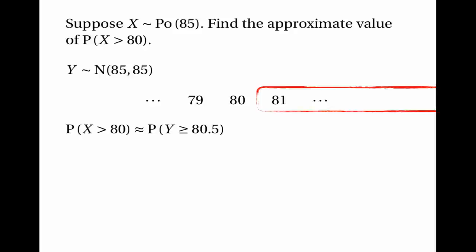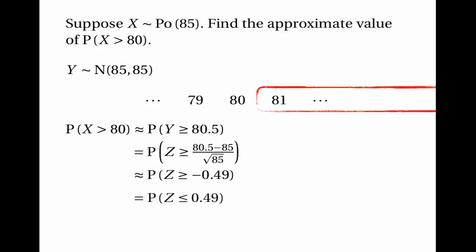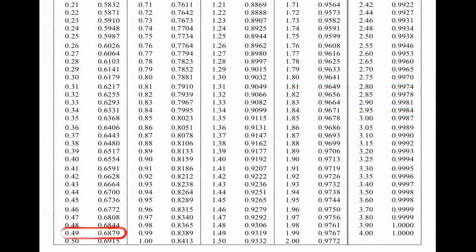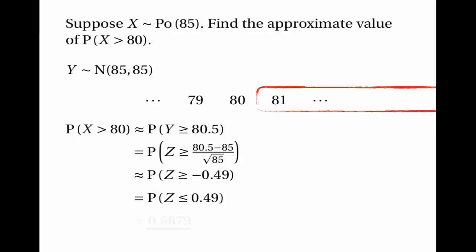The next step is to standardize by subtracting the mean and dividing by the standard deviation. So this is the same as the probability that Z is greater than or equal to (80.5 − 85) divided by the square root of 85, which is approximately the probability that Z is greater than or equal to −0.49. By symmetry of the standard normal distribution, this equals the probability that Z is less than or equal to 0.49. Looking that up in the tables gives 0.6879. So the probability that X is greater than 80 is approximately 0.6879.